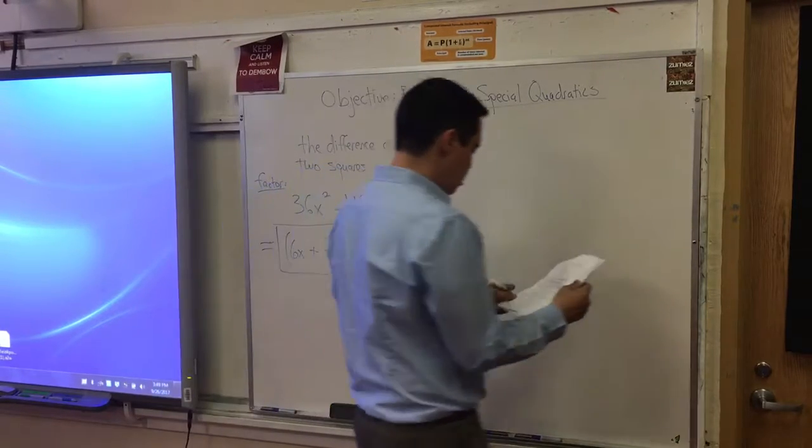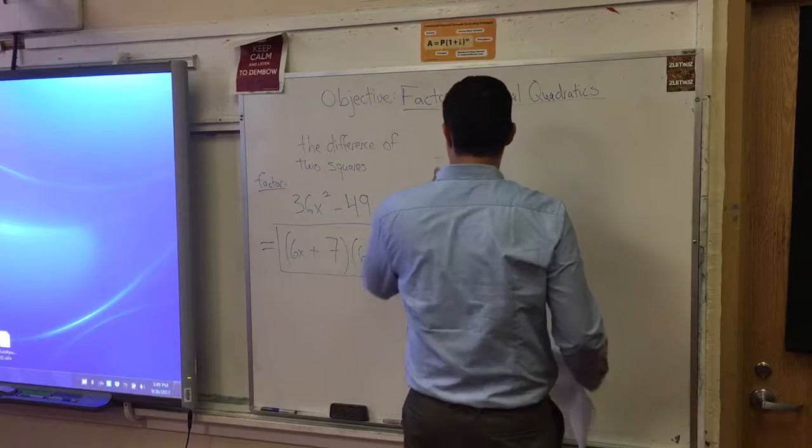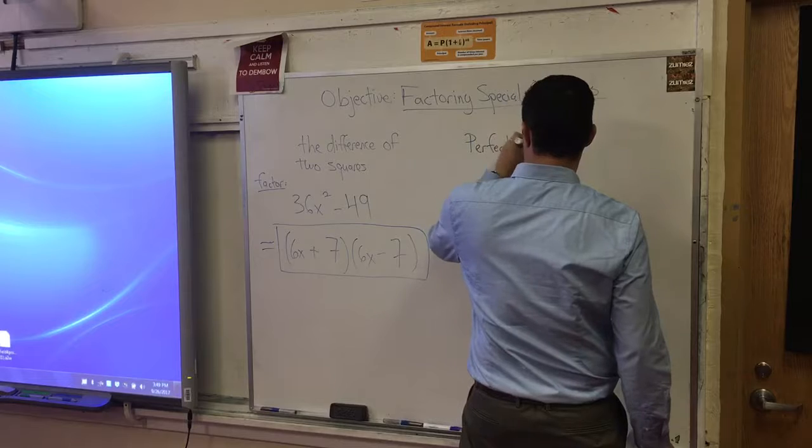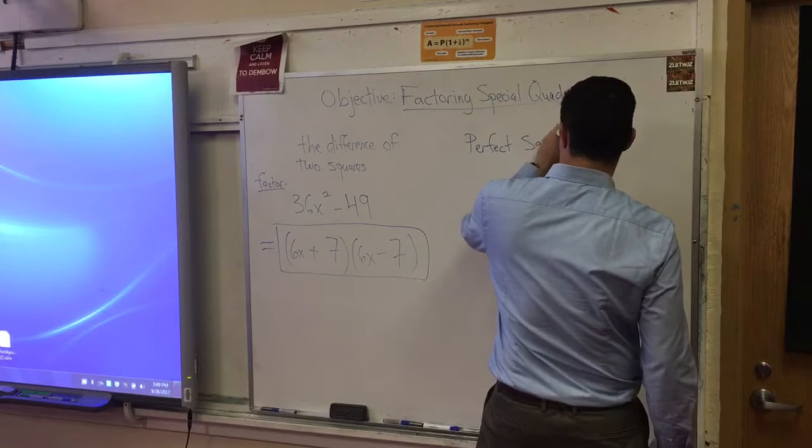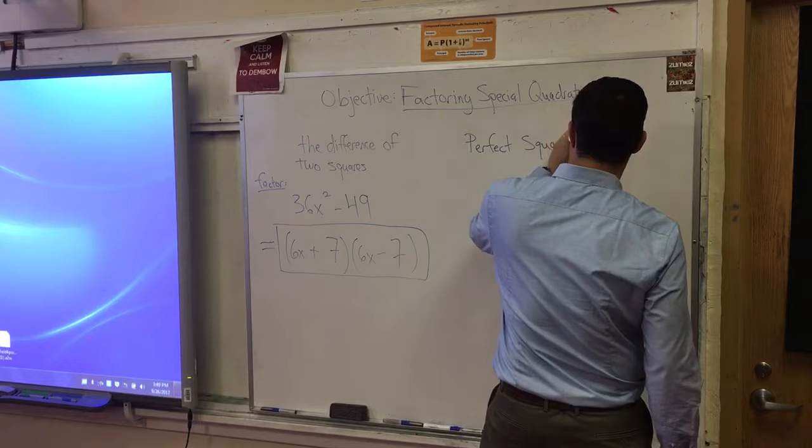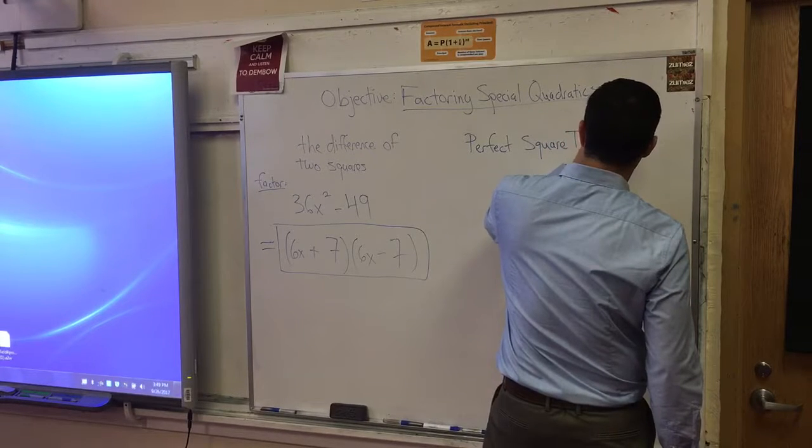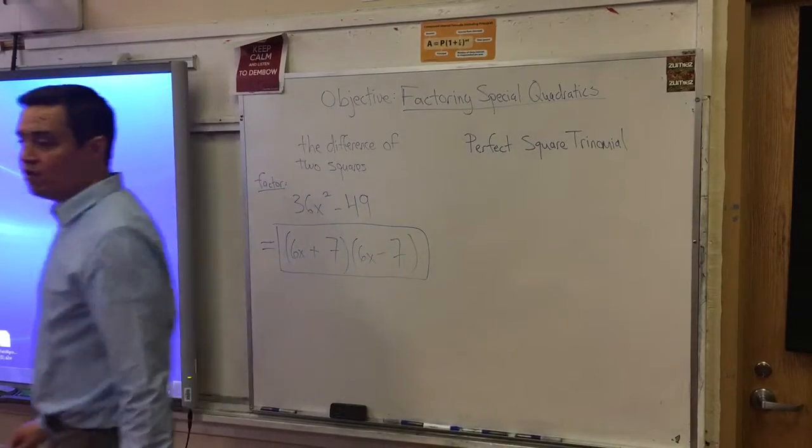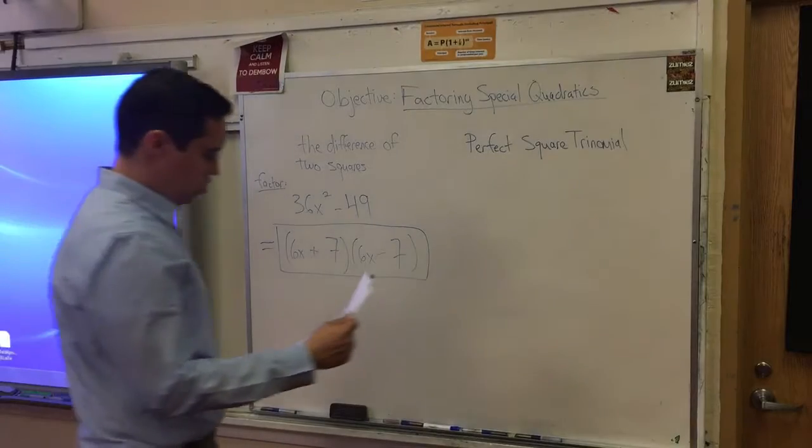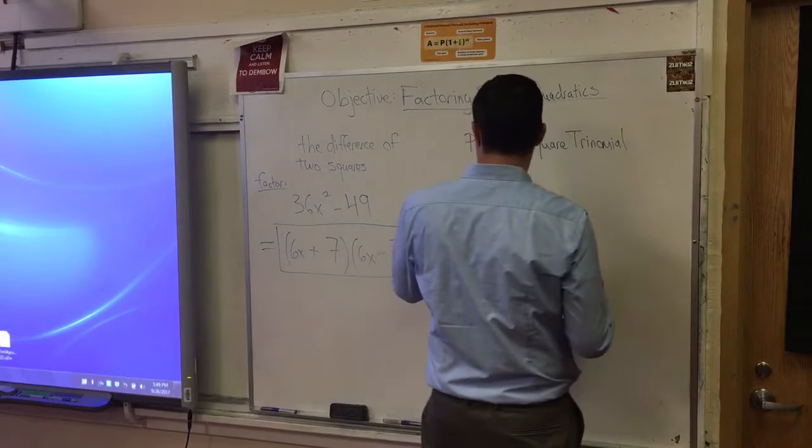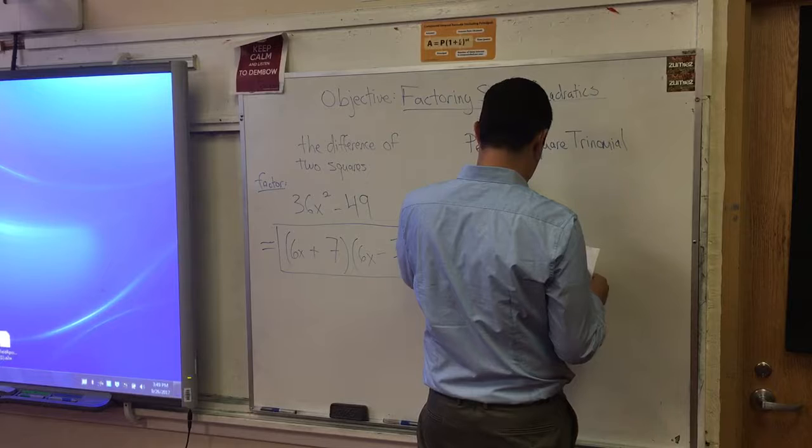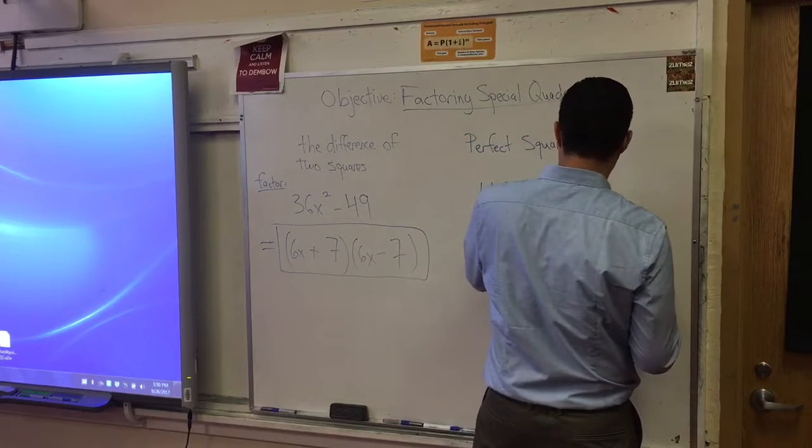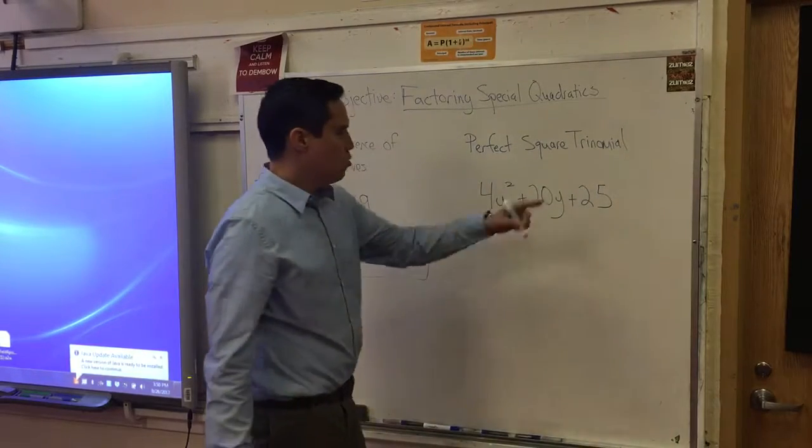The other thing that we're going to learn in this section is the perfect square trinomial. The perfect square trinomial looks like this: 4y squared plus 20y plus 25. All the terms are positive.